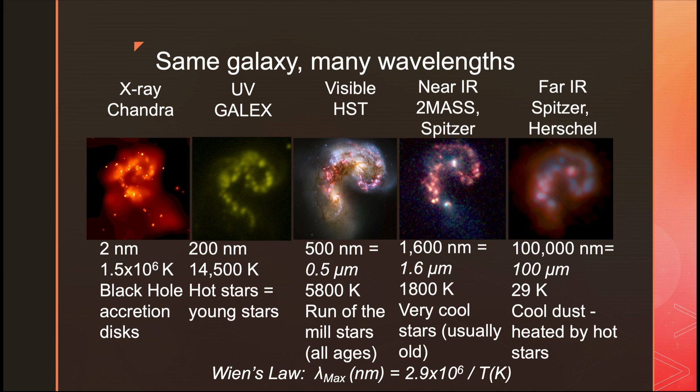In X-rays we're looking at wavelengths of about 2 nanometers — a nanometer is a billionth of a meter — and temperatures around a million Kelvin, which gives us things like black hole accretion disks. In the ultraviolet, wavelengths are around 200 nanometers and temperatures around 15,000 Kelvin — those are the hot, young stars. In the optical, wavelengths are about 500 nanometers (half a micron), temperatures around 6,000 Kelvin — run-of-the-mill stars like our Sun.